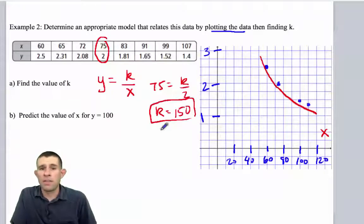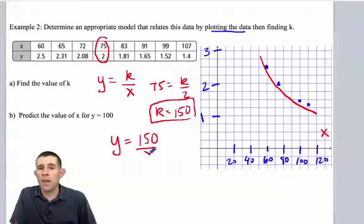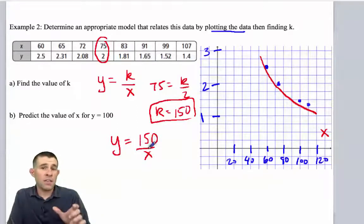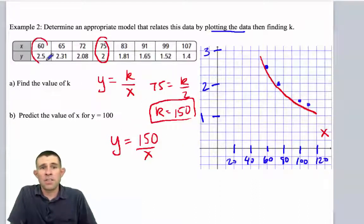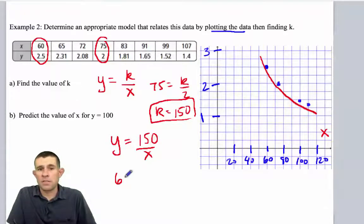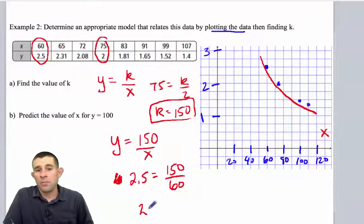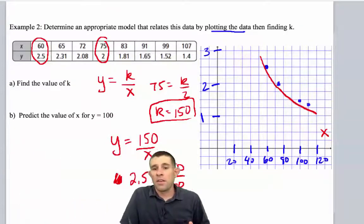Now, this tells me that my equation should be y equals 150 over x. I should go ahead and check that accuracy with one other point from my table. So let's check the point 60 and 2.5. So 2.5 should be the result when I take 150 and divide it by 60. And I see that 2.5 is the result of 150 divided by 60. And therefore, this is the correct inverse variation equation.